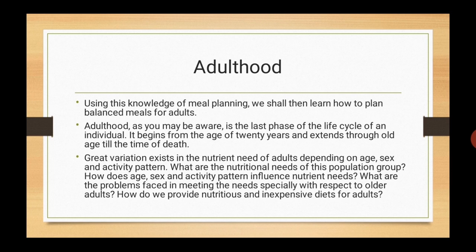In this unit, we will learn how to plan balanced meals for adults. Adulthood is the last phase of the life cycle of an individual. It begins from the age of 20 years and extends through old age till the time of death. Great variation exists in the nutrient need of an adult, depending on age, sex and activity pattern. We will study about this in the second part of this unit. First, let's learn about meal planning.